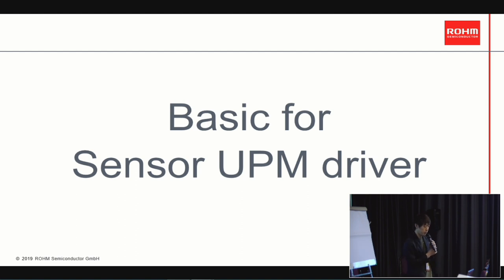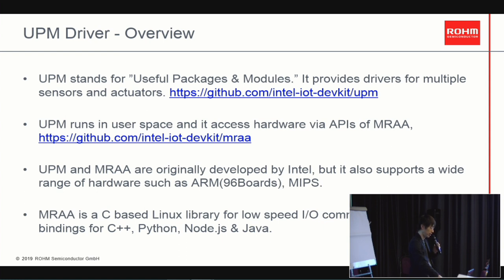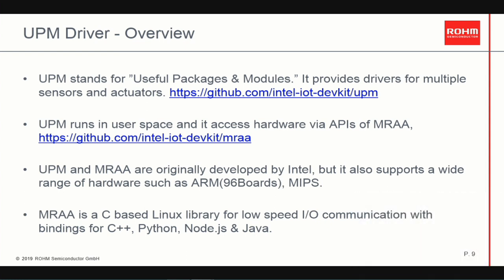Let's go to the main agenda. I will introduce the first sensor platform called UPM. It stands for Useful Packages and Modules. It provides drivers for multiple sensors and actuators. UPM runs in user space and it accesses hardware via APIs of MRAA. UPM and MRAA are originally developed by Intel, but also support a wide range of hardware such as ARM, MIPS and so on.